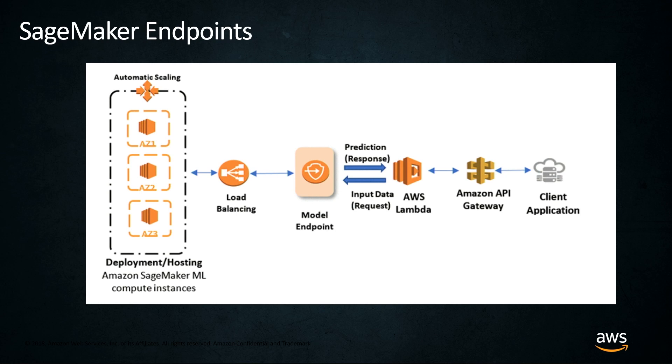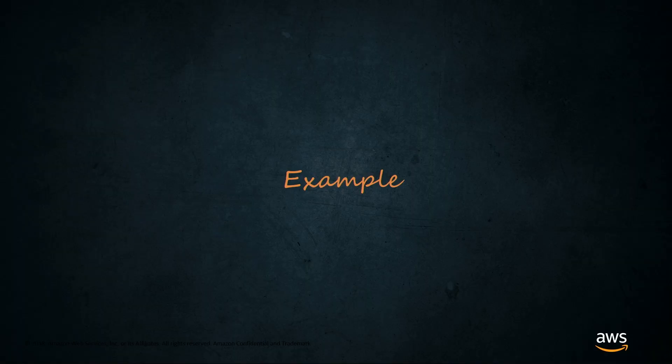Your SageMaker endpoint is best for cases of online inferencing — when you have data coming in from the internet and you need to serve prediction responses in real time. We're talking sub-second latency; you need your responses to be fast. That's what your SageMaker endpoint is going to be for. Let's check out an example.